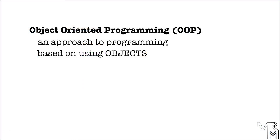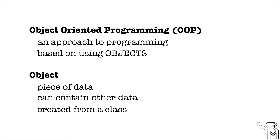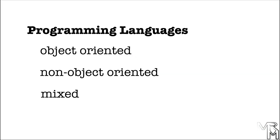Object-Oriented Programming, or OOP, is an approach to creating computer programs. OOP is based on using objects. Objects, in a nutshell, are just pieces of data that can contain other pieces of data. Using objects makes it somewhat easier for us to handle large amounts of data. Objects are created from classes. A single class can be used to create multiple objects of the same type. To create computer programs using the object-oriented approach, we need a programming language that supports OOP. There are a lot of programming languages — some of them are exclusively object-oriented, some are not object-oriented at all, and some support both object-oriented and non-object-oriented programming.